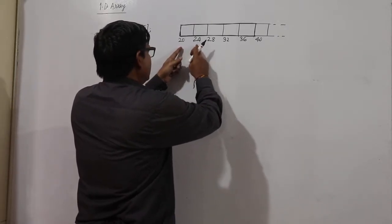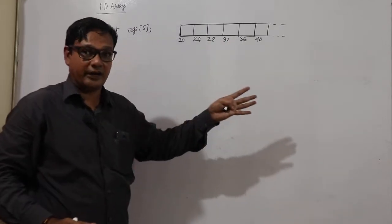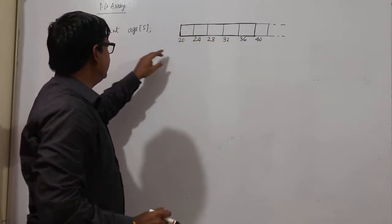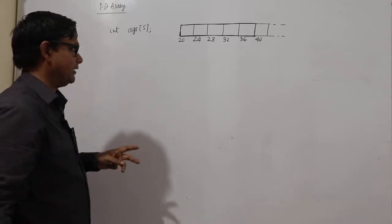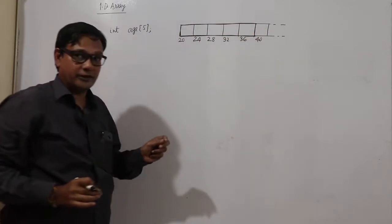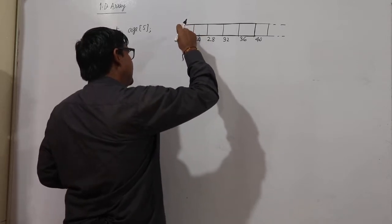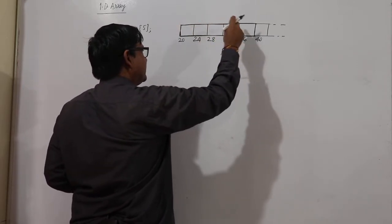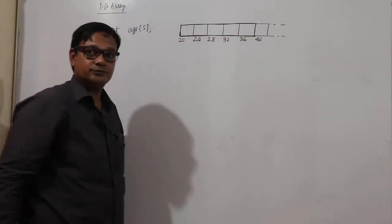20, 24, 28, 32, 36, 36 to 39. These memory locations will be allocated to this age. I am taking an example here. And how to access these memory locations. How to make that some element will be stored at these positions.